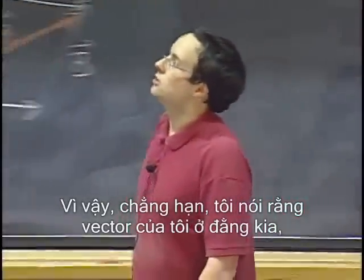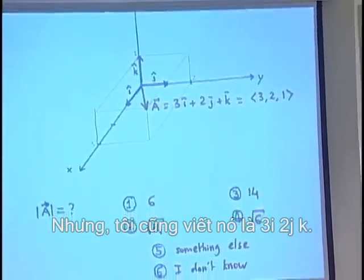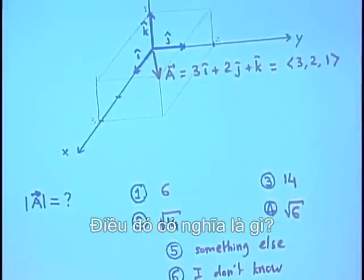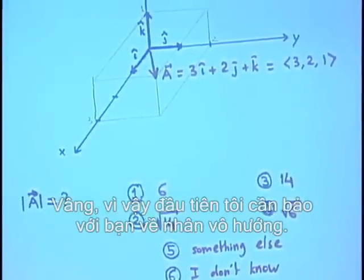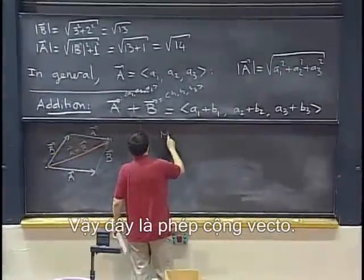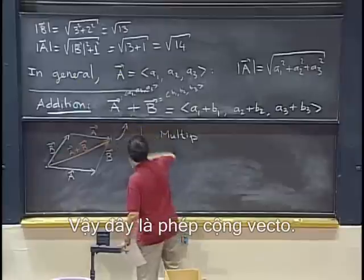So, for example, you know, I said that my vector over there, its components are 3, 2, 1. But, I also wrote it as 3 times i plus 2 times j plus k. What does that mean? Oh, so I need to tell you first about multiplying by a scalar. So, this is about addition.